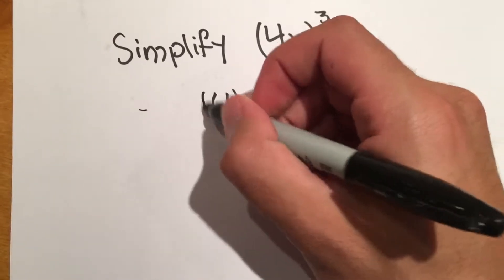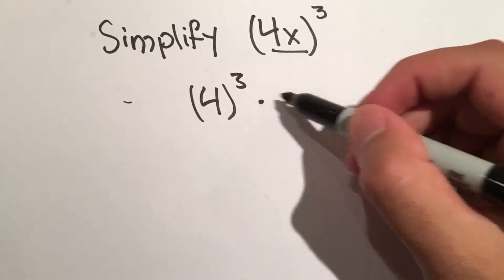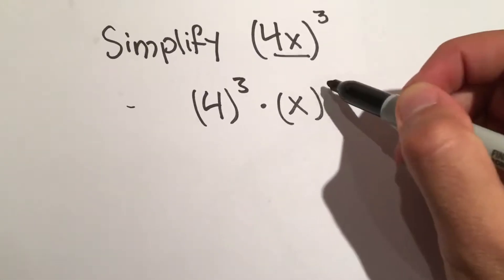So it's going to be 4 to the third times x to the third.